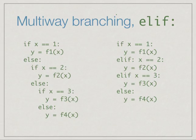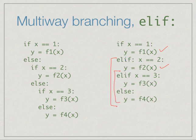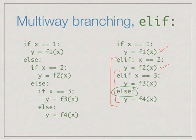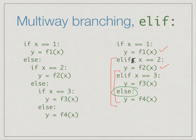With elif, it checks the condition X == 1 first; if true it invokes F1, otherwise it directly checks the next condition. We can chain multiple elif clauses and end with an optional else that catches all remaining cases without explicitly enumerating them. This avoids the long indentation sequence of nested if-else blocks, which makes code much more difficult to read. The final else is optional, just as it is with a normal if.